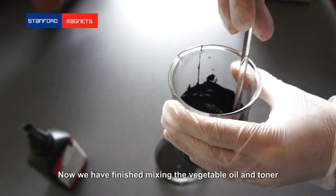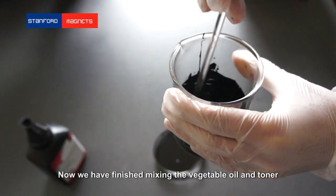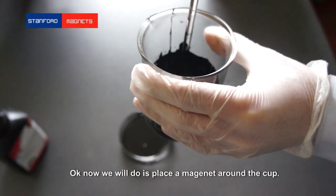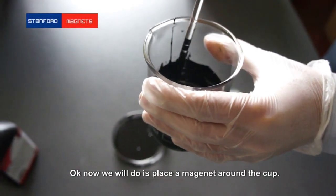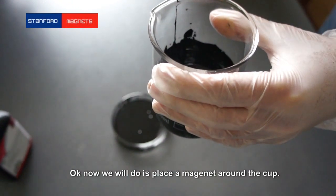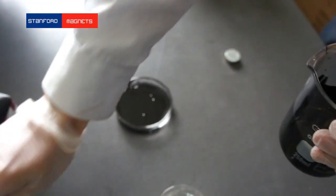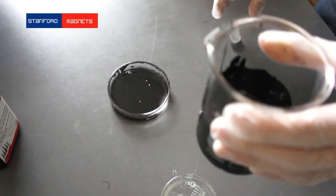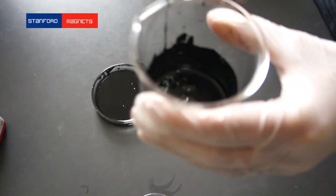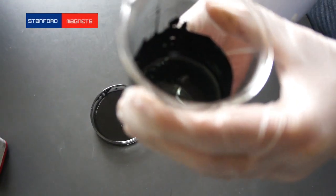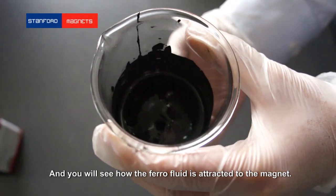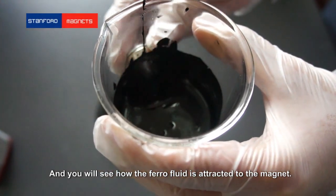Now we have finished mixing the vegetable oil and the toner and we have made the ferrofluid. Now what we will do is place a magnet around the cup. And you can see how the ferrofluid is attracted to the magnet.